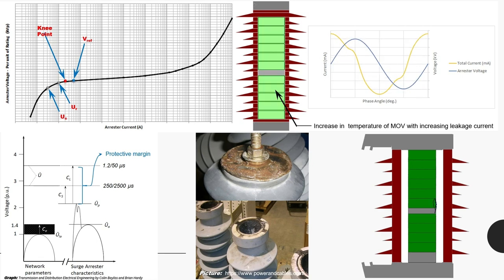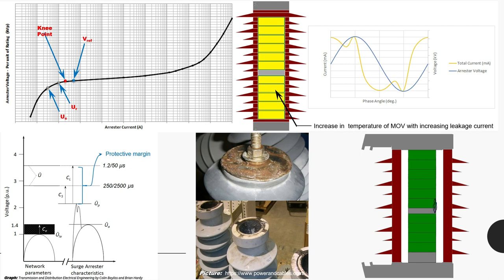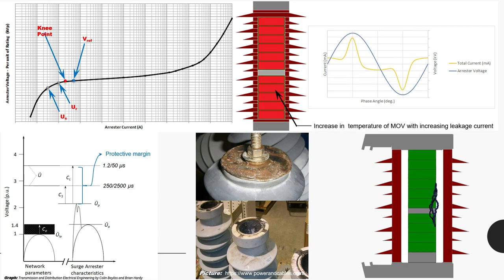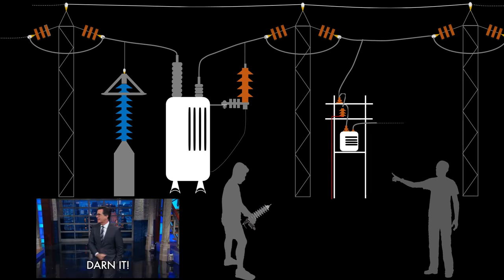Partial discharge test is performed to identify if there is any problem in the assembly of the product. The problem starts as a periodic partial breakdown of insulation, and if ignored, it has a likelihood of complete breakdown of insulation. For assessing the health of an arrester, not all the above-mentioned tests can be performed at site without compromising on the recommended procedure as per the standard.